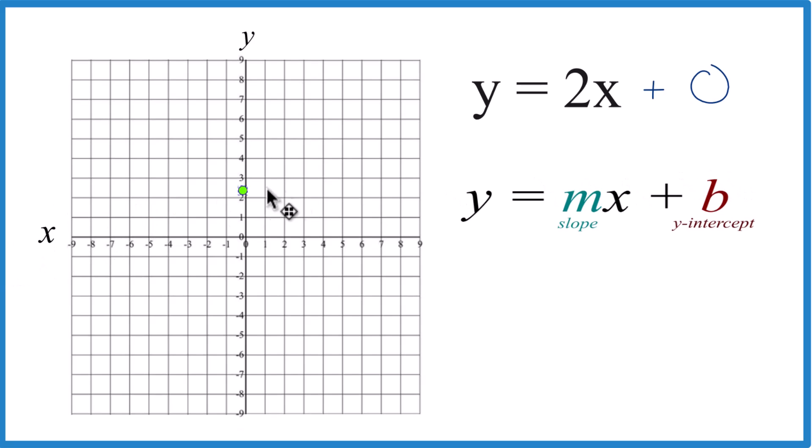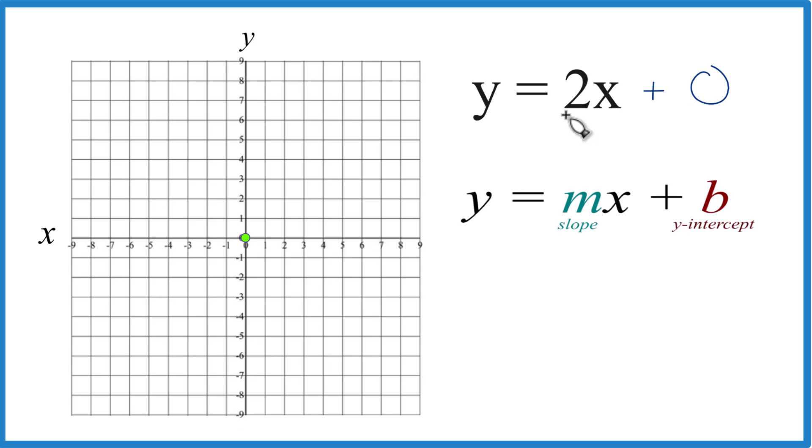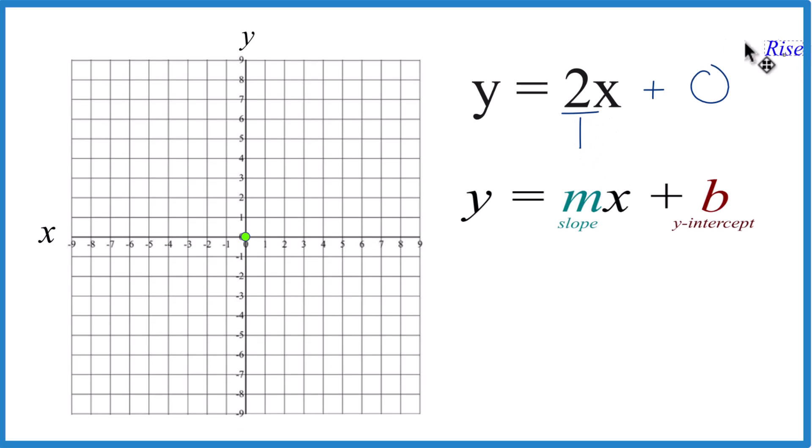So let's put a point here on the y-axis at zero. That's our first point. For the slope m, we have 2. It's helpful to think of that as 2 over 1 because now we can call the 2 rise and the 1 run. So we have rise over run.